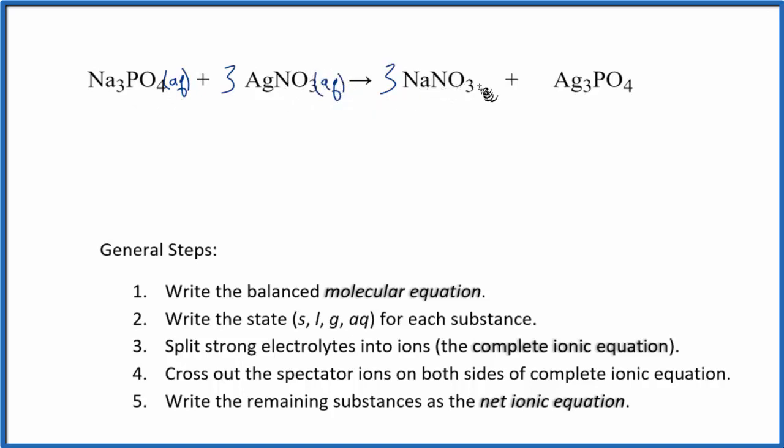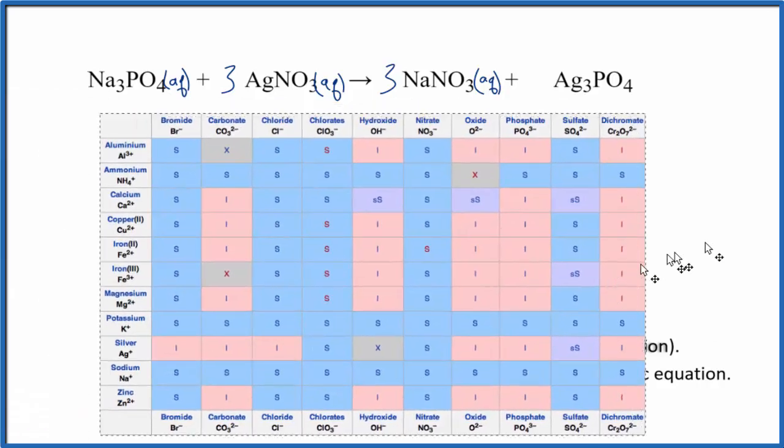Sodium compounds again and nitrates, that's going to be definitely soluble. But this silver phosphate, phosphates usually aren't soluble unless they're bonded to a group one metal or ammonium ion. But let's take a look at the solubility table, see what we can find.